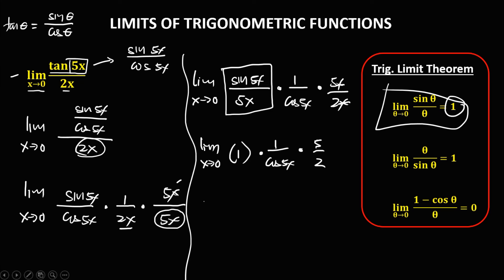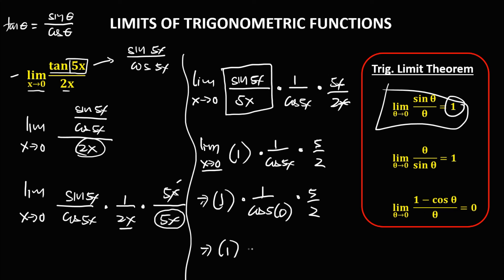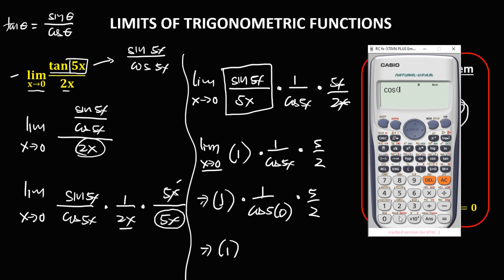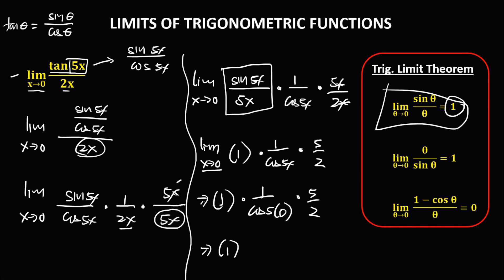Substituting x equals 0, we have 1 times 1 over cosine(5·0), times 5 over 2. Since cosine(0) equals 1, then 1 over cosine(0) also equals 1. Therefore the result is 1 times 1 times 5 over 2, which gives us the final answer of 5/2.